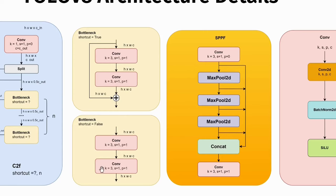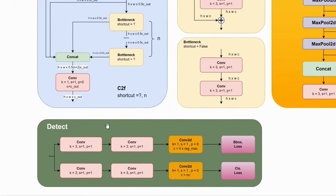The last block is the detect block. This is where the detection happens. Different from previous YOLO versions, YOLOv8 is an anchor-free model. The predictions happen in the grid cell. The detect block contains two tracks: the first track is for bounding box prediction, whereas the other is for class prediction. Both tracks have the same block sequence, which is two convolutional blocks and a single 2D convolutional layer.